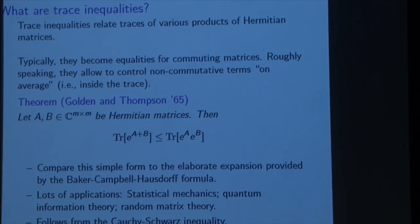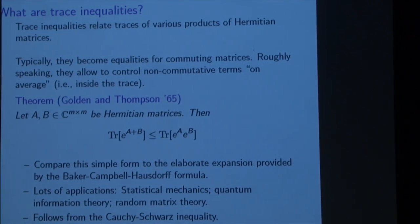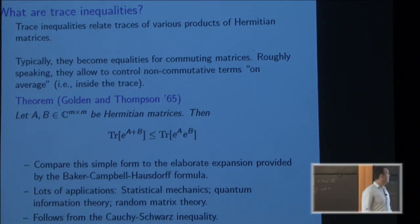Typically, these inequalities become equalities for commuting matrices. They're usually easy when things commute. And in some sort of high-level sense, perhaps, they allow one to quantify certain non-commuting aspects of these matrix products if they come under a trace. These are the two important ingredients. One, it's an inequality, so some sort of controlling things is not an equality, typically. And it has to be, on average, somewhat inside the trace. Then one can usually say more than somehow just direct computation of the matrices would tell one.